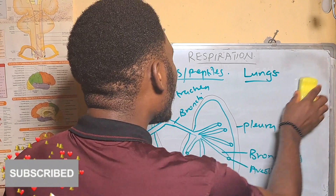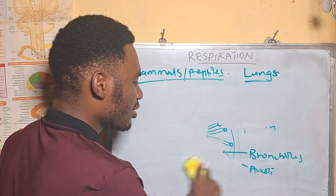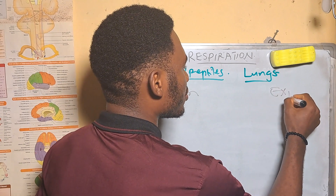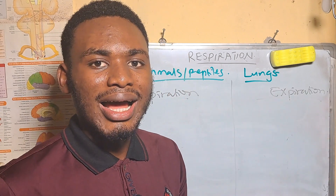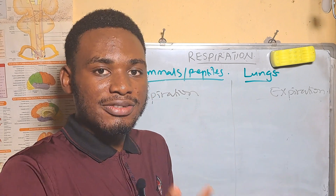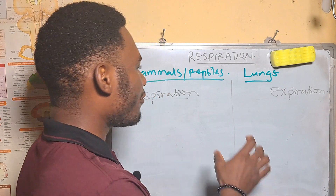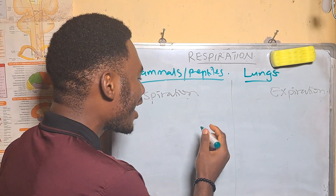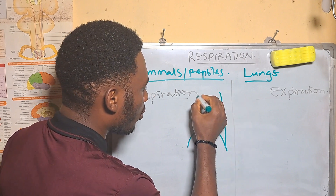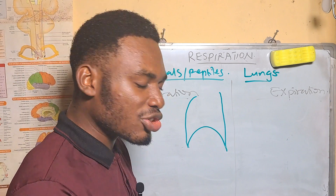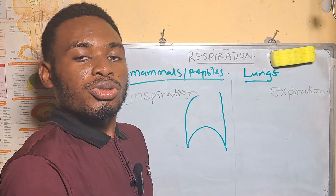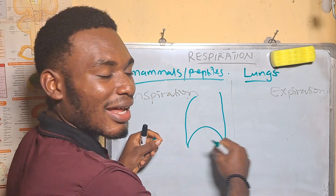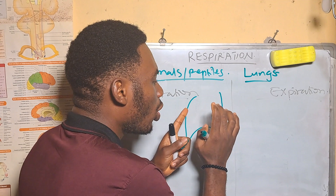The mechanism of respiration in mammals involves two processes: inspiration and expiration. There is a structure dividing the thorax from the abdomen called the diaphragm. In a normal person who is not inspiring, the diaphragm is dome-shaped. During inspiration, you are trying to take in air and oxygen, so the diaphragm flattens — because once it flattens, the volume of the thorax increases.